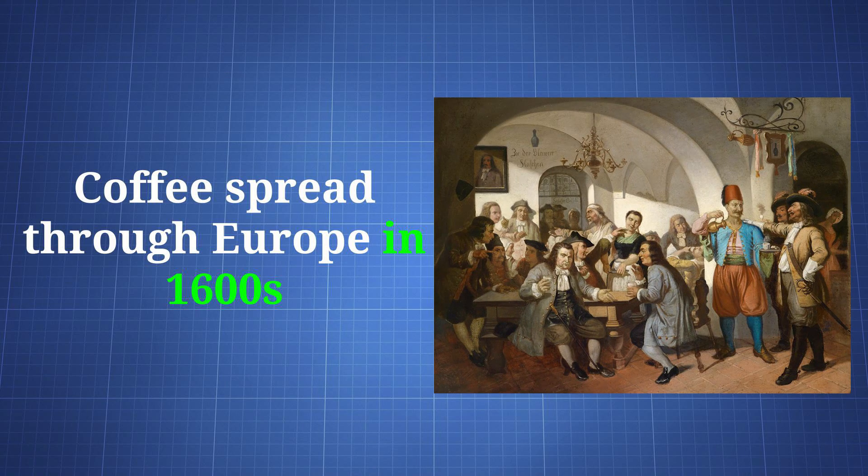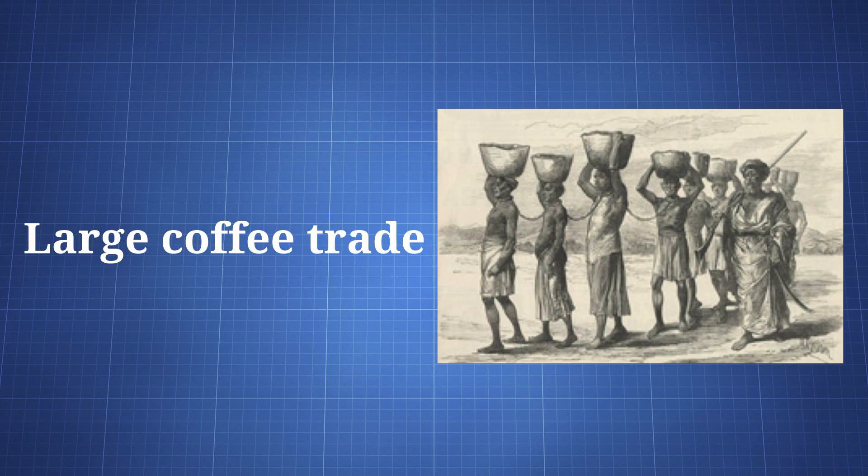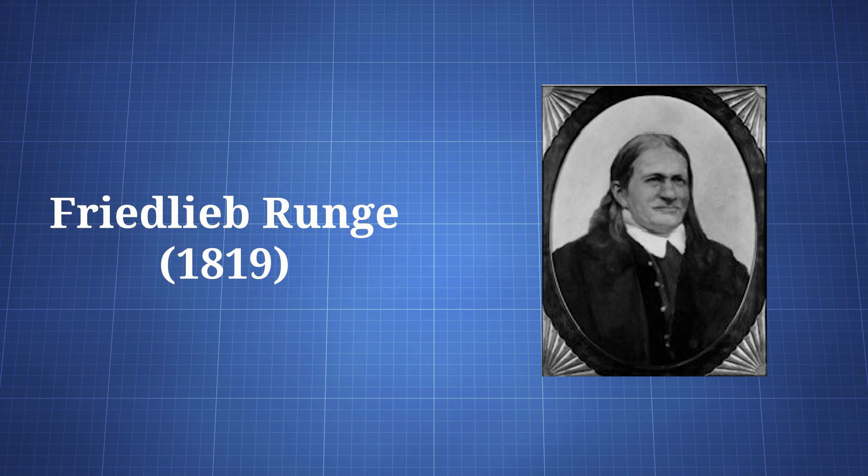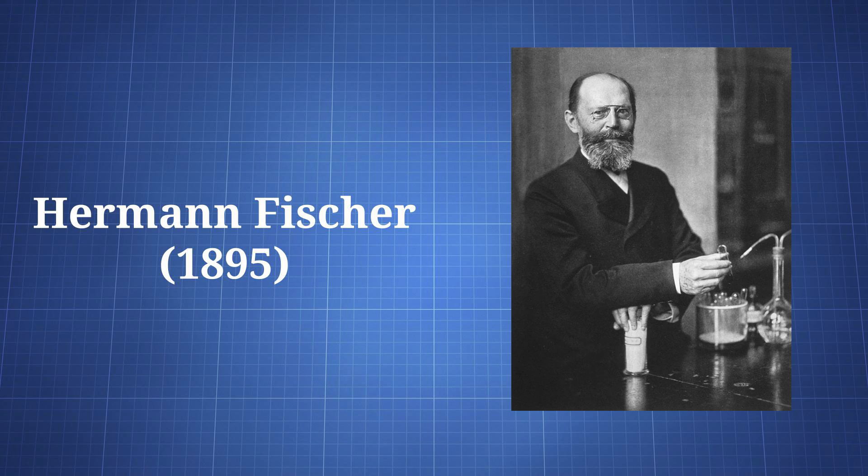During the 1600s, coffee spread through Europe as a medicine, as well as a social and work drink. This resulted in a large coffee trade. It was isolated for the first time in 1819 by Friedlieb Runge. Then, in 1895, it was synthesized by German chemist Hermann Fischer.